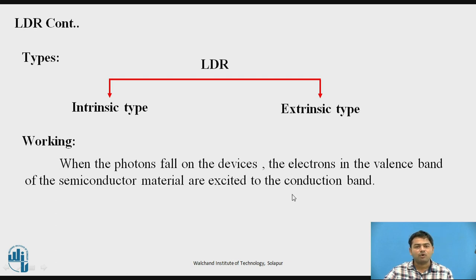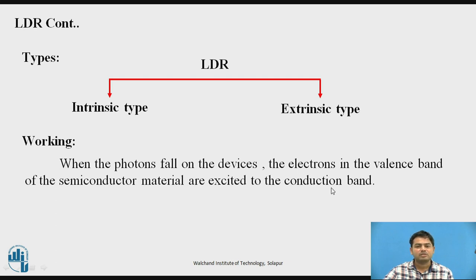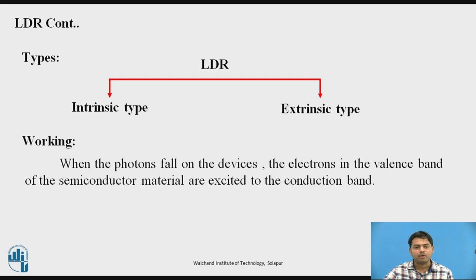Working of the LDR: when light falls on the light dependent resistor, most of the electrons in the valence band jump into the conduction band. As more electrons move to the conduction band, the conductivity of the LDR increases. Conductivity increasing means resistance decreases, because resistance is inversely proportional to conductivity. Similarly, when no light falls on it, there is high resistivity — the semiconductor acts as an insulator, presenting a high amount of resistance.